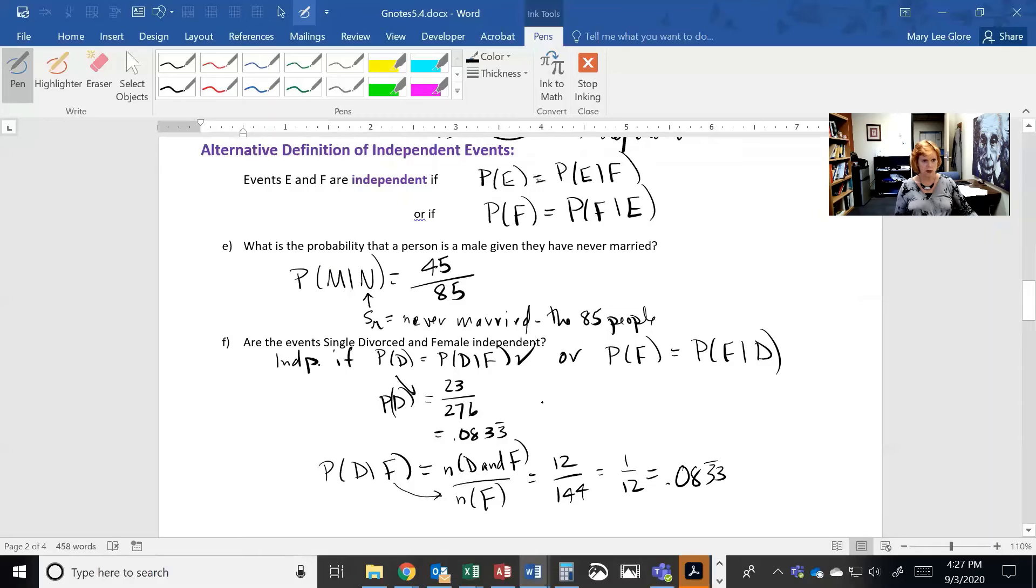So this is true. So the answer is yes. Are they independent? Yes. Why? Because this is true. Because the probability of being divorced is equal to the probability of divorce given female.